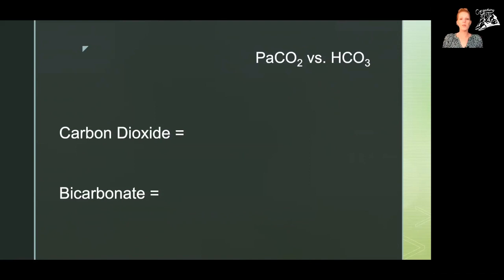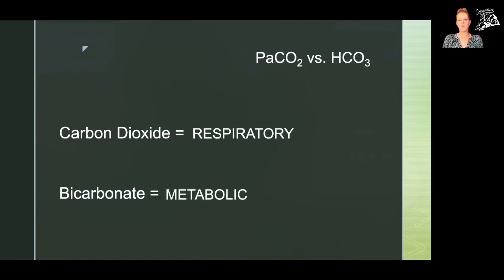We need one more piece of information in order to interpret all of our data and solve an arterial blood gas problem. We focus on partial pressure of carbon dioxide and bicarbonate because each one has a specific function in the body. Carbon dioxide is associated with our respiratory system — we breathe in oxygen and we breathe out carbon dioxide. Bicarbonate is associated with our metabolic system, and this is how we determine if we have respiratory or metabolic acidosis or alkalosis.